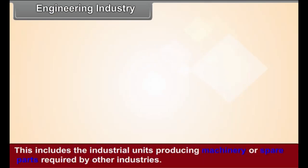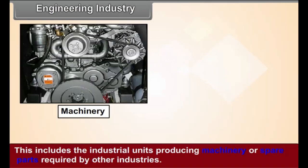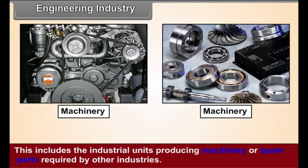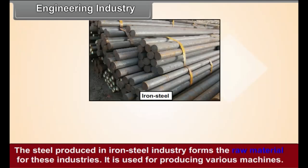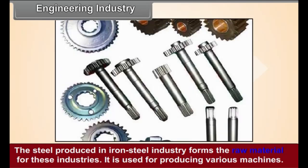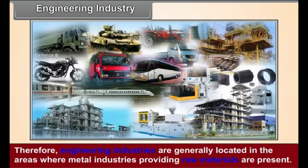Engineering Industry. This includes the industrial units producing machinery or spare parts required by other industries. The steel produced in the iron and steel industry forms the raw material for these industries. It is used for producing various machines. Therefore, engineering industries are generally located in areas where metal industries providing raw materials are present.